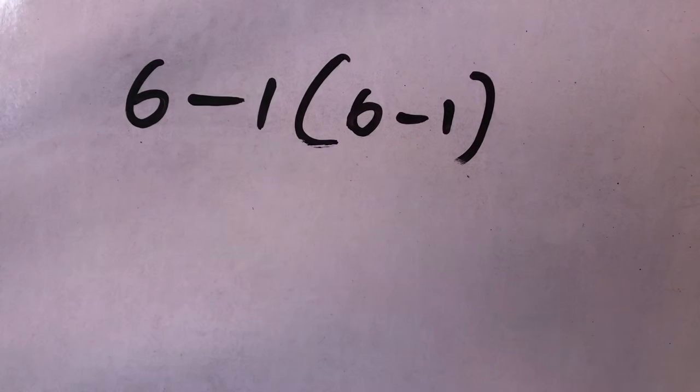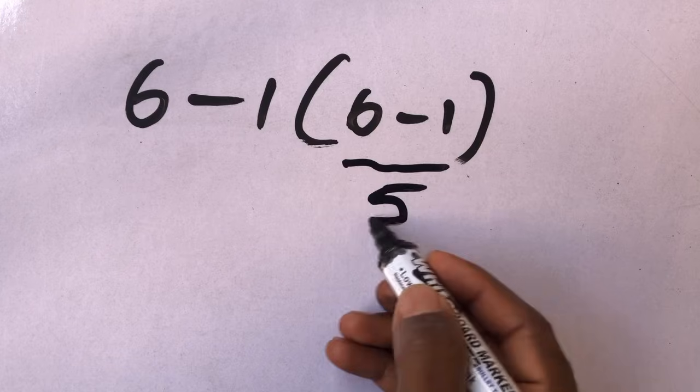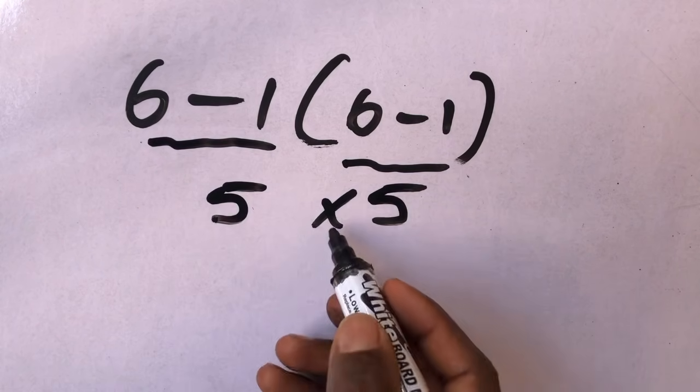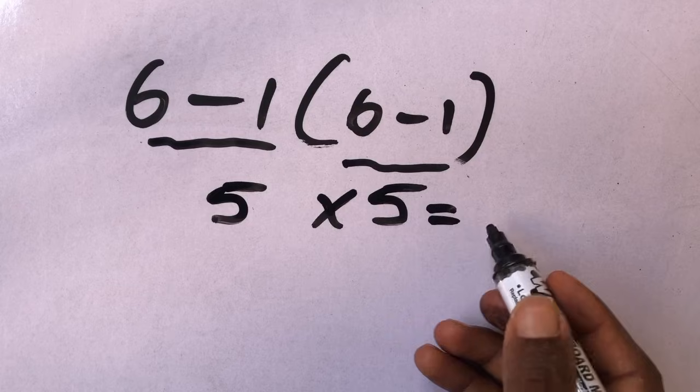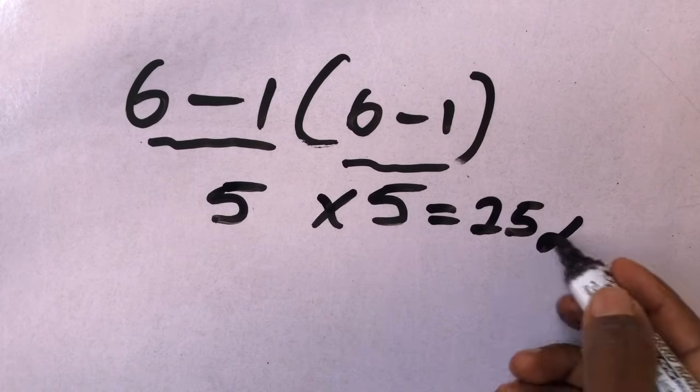6 minus 1 times 6 minus 1. This minus this will give us 5 times this minus this 5. 5 times 5 is equal to what? 25. But this answer is not correct.